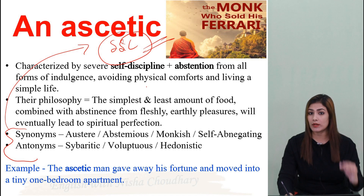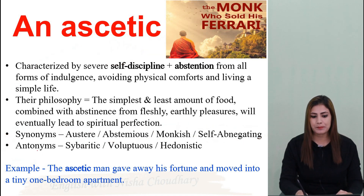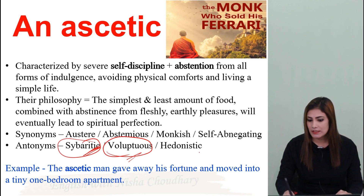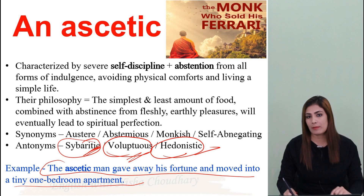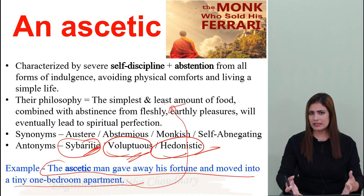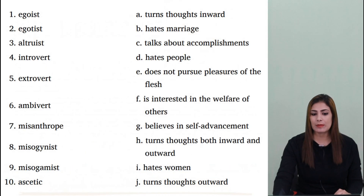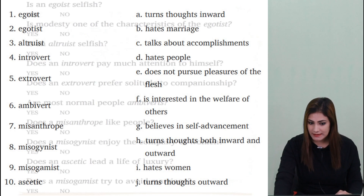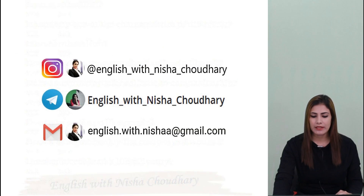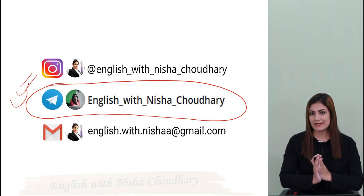All these synonyms and antonyms have appeared in exams, so note them down carefully — they repeat. Synonyms for ascetic: austere, abstemious, monkish, self-abnegating. Antonyms: sybaritic, voluptuous, hedonist. For example: The ascetic man gave away his fortune and moved into a tiny one-bedroom apartment, because he feels that is sufficient — he does not want to indulge in earthly pleasures. This completes your first session. Practice by matching the words given — try to see how much you remember. Answers will be available on my Telegram channel as a PDF. Thanks for listening and just keep practicing.